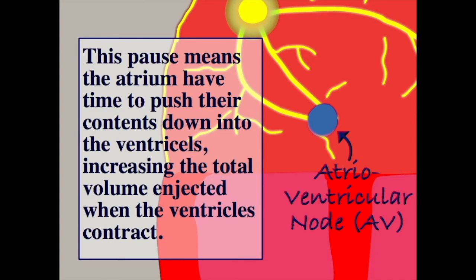Without the AV node, the atrium and ventricles would contract nearly simultaneously, resulting in less blood in the ventricles on contraction, reducing cardiac output.